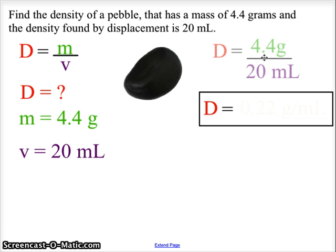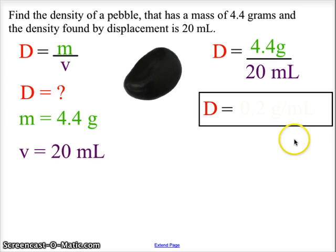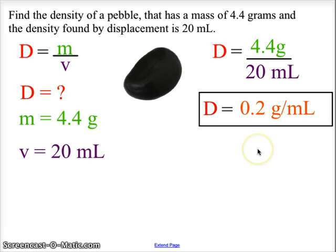We plug those into our density formula: 4.4 grams over 20 milliliters. Our calculation comes out to be 0.22 grams per milliliter. But because we only have one significant digit in the number 20 — there's no decimal after the zero — our answer can only have one significant digit. So our final answer is 0.2 grams per milliliter.